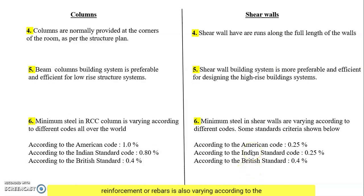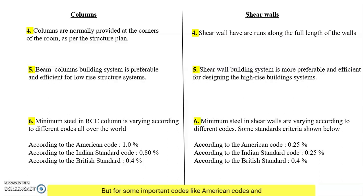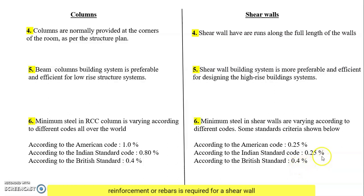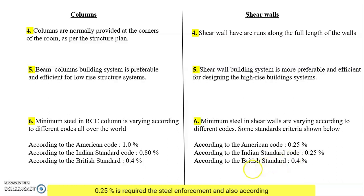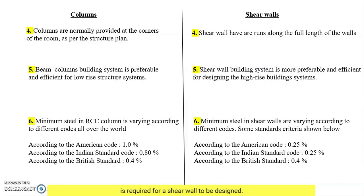For shear walls, the minimum steel reinforcement also varies according to different codes. According to the American code, 0.25% steel reinforcement is required for shear walls. According to the Indian Standard, 0.25% steel reinforcement is required. According to the British Standard, 0.4% steel reinforcement is required for shear walls.